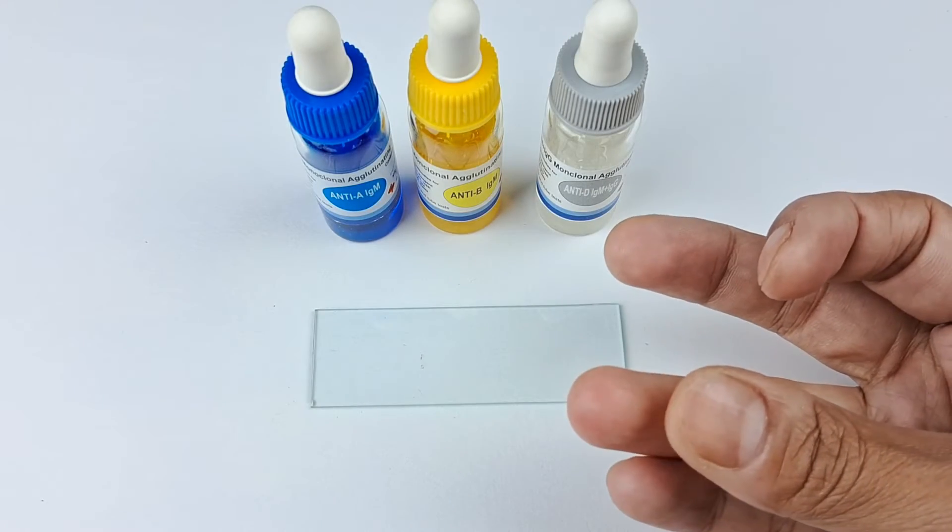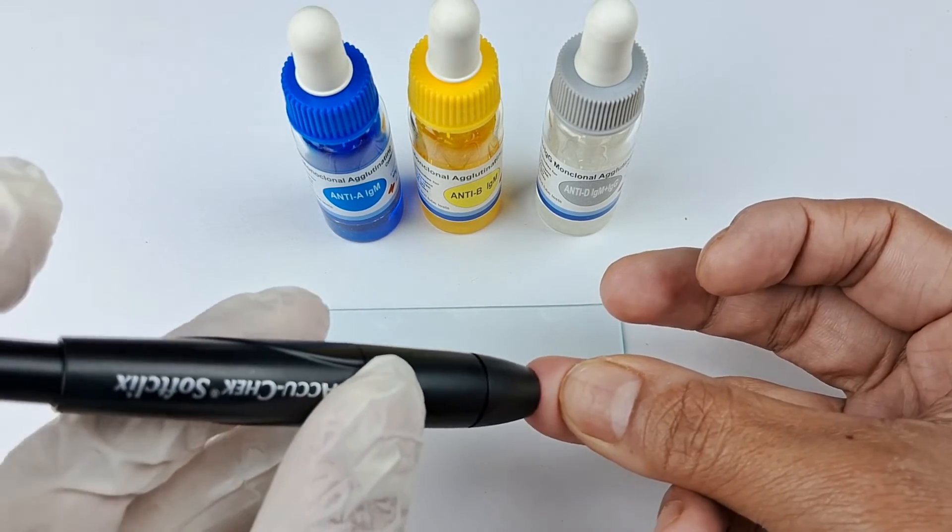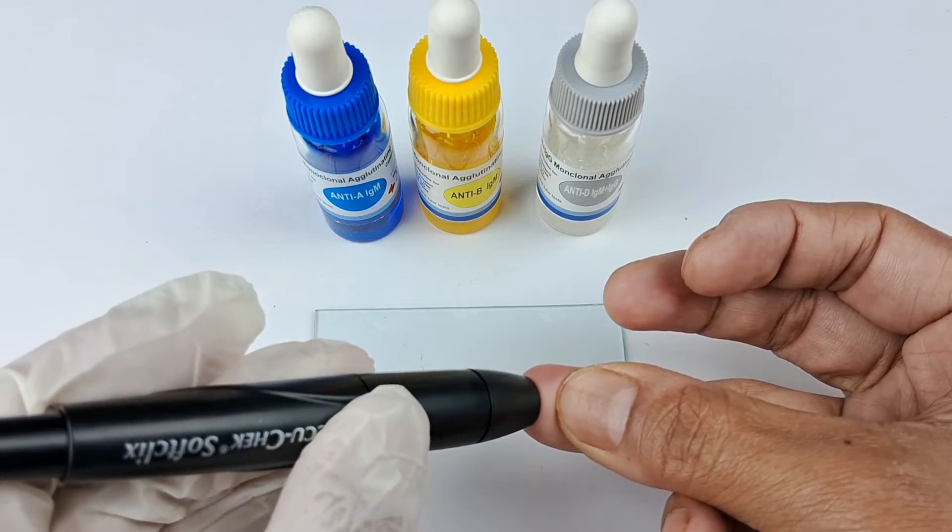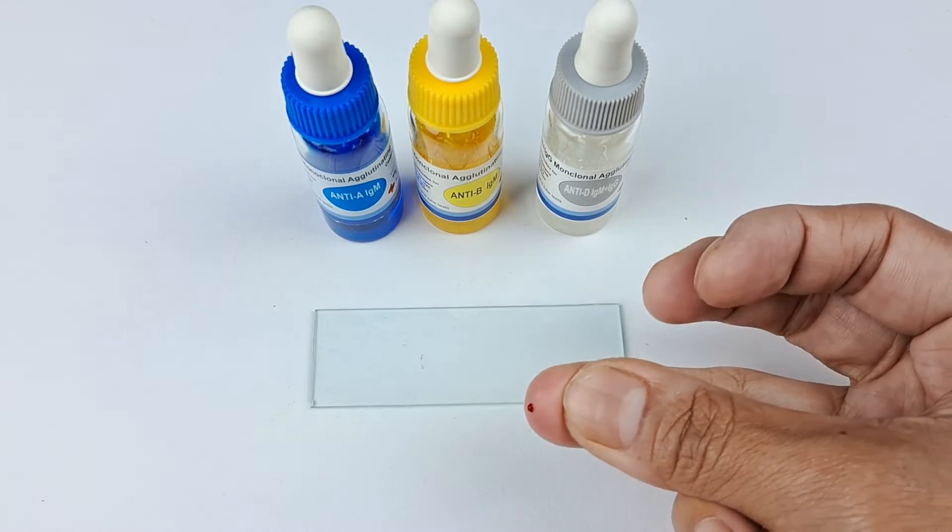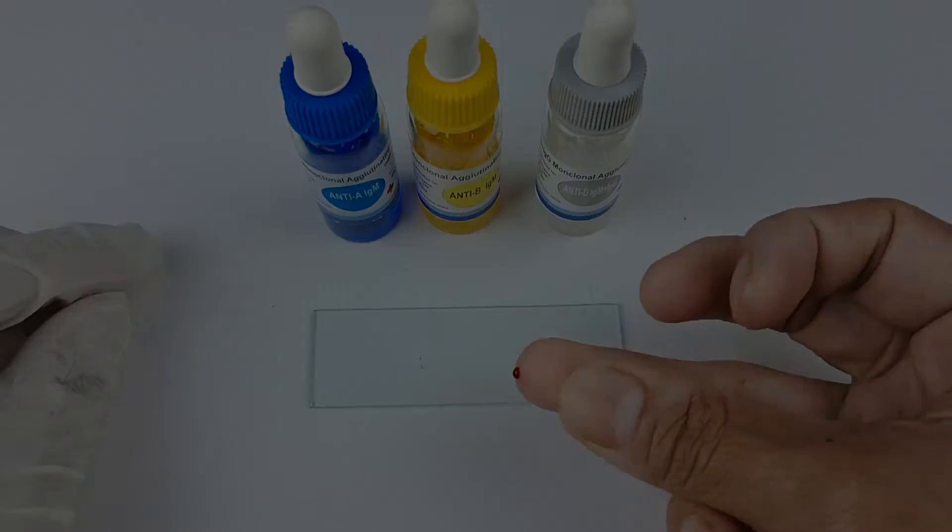Allow the alcohol to dry and then gently but briskly prick the finger using the lancet or the pricking pen. Always remember to use a new lancet or pricking needle for each person. You may or may not wipe off the first blood ooze.